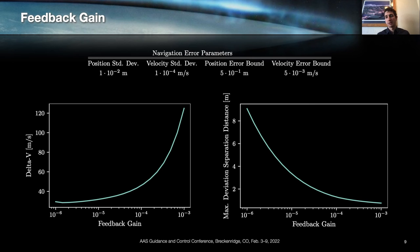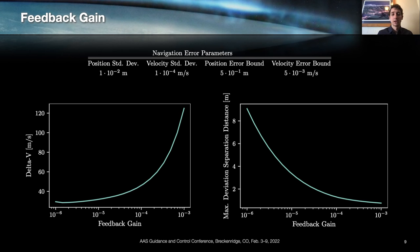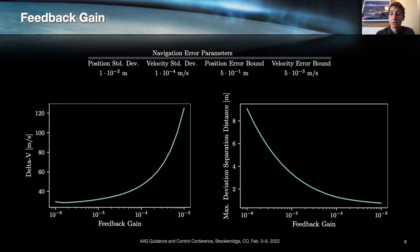Next we performed Monte Carlo simulations for different potential estimation errors, mass errors, and MSM models. Before running these we needed to find a good feedback gain for the controller. As expected, a higher feedback gain results in increased delta-v but also decreases the maximum deviation between the desired and actual position of the servicing satellite. Based on these graphs we chose a feedback gain of 10 to the negative 5, as this has an acceptable delta-v and acceptable maximum deviation for the separation distance.